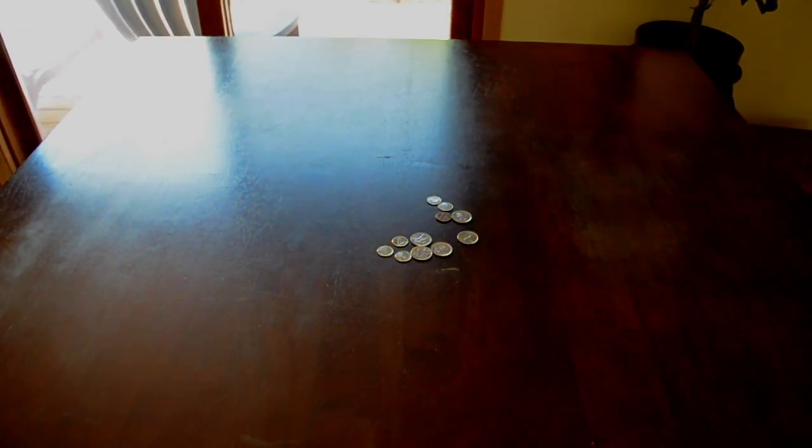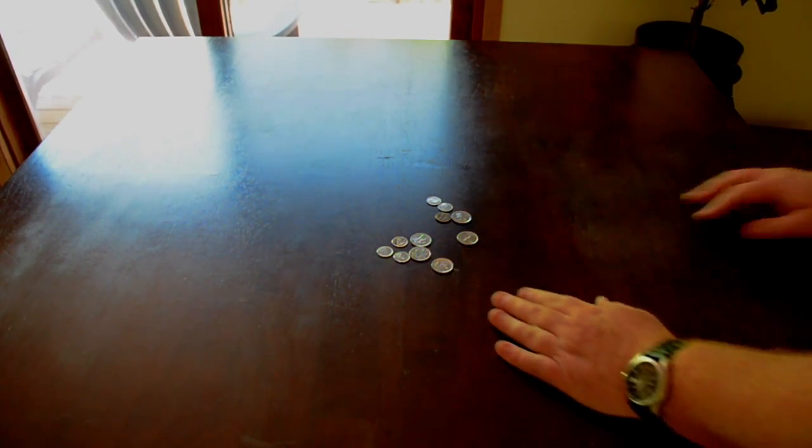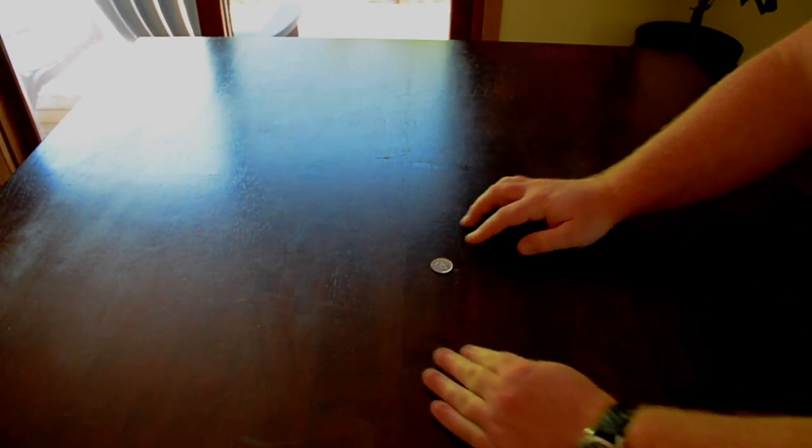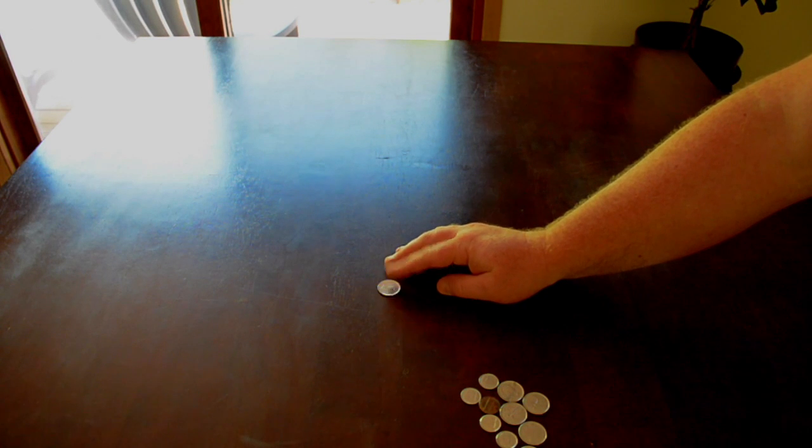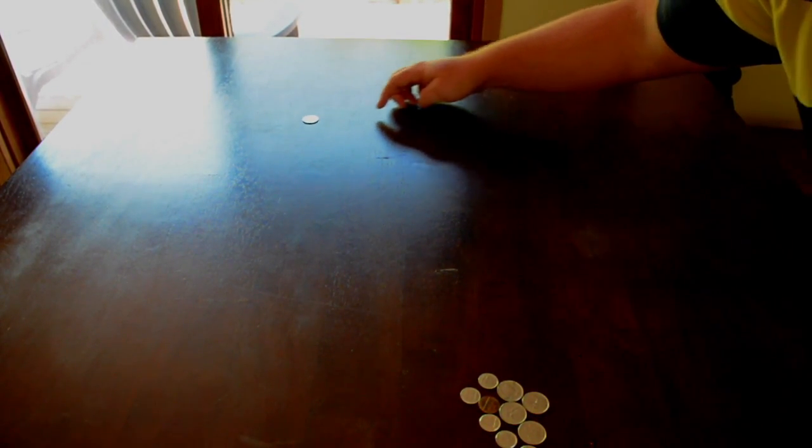All you need is a quarter for the first one. You could use a loony or a toonie or something bigger than a quarter, but usually it's just with a quarter. You can use any size of table, like a harvest table would be good. I used to play this in high school. We used to use the big library tables or the big cafeteria tables.